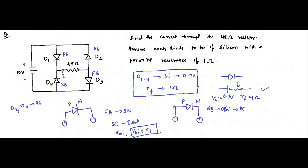The concept in this question: first, pick which diodes are forward biased and which are reverse biased — that is the first concept to understand. In a circuit, you first identify which diodes are forward biased and which are reverse biased. The second concept is to identify what equivalent representation to substitute for each diode. Here each diode is silicon with a forward resistance of 1 ohm, and nothing is mentioned about the diode being ideal.